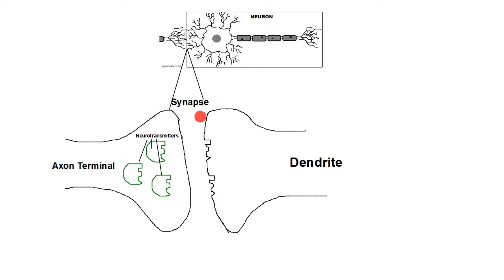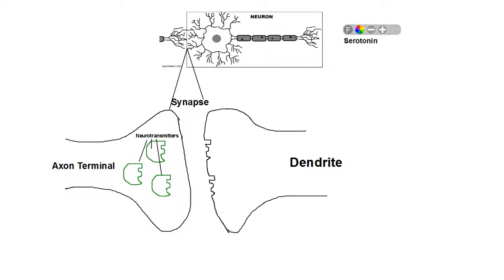That's how neurotransmitters work. Some of the more common neurotransmitters are serotonin — neurotransmitters are very complicated and often do a lot of things. To oversimplify it, having serotonin reduces anxiety and depression.